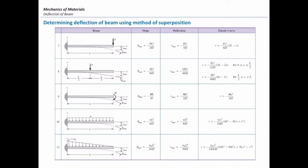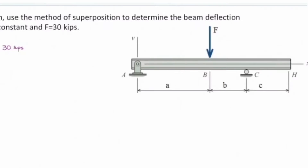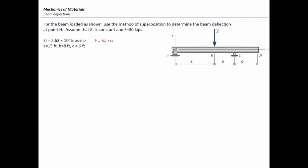Looking at this problem again, it consists of two main parts. From A to C, it's a simply supported beam, and from C to H, it's a cantilever beam. So I can split this structure into two parts. Let me first focus on the simply supported beam from A to B.